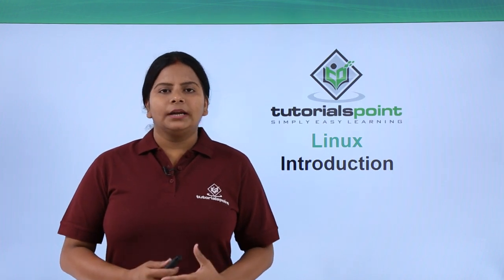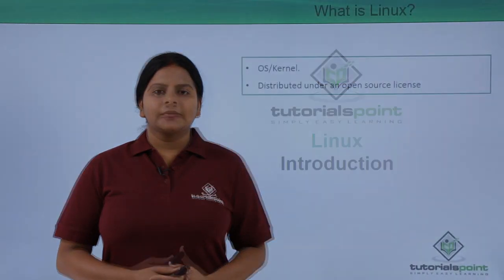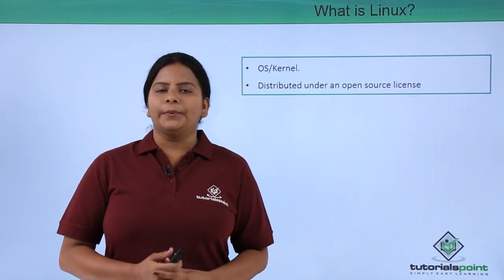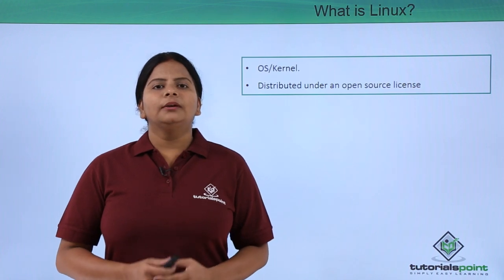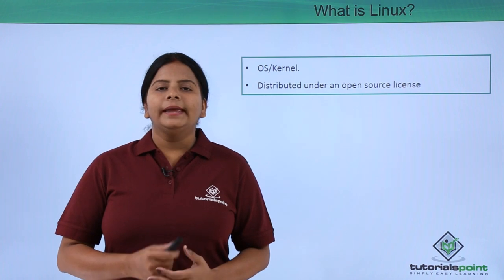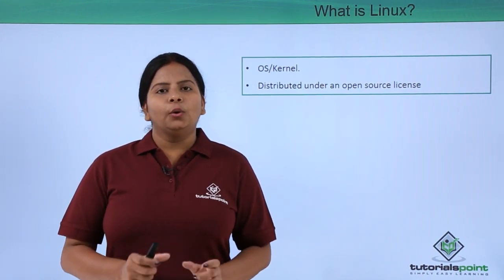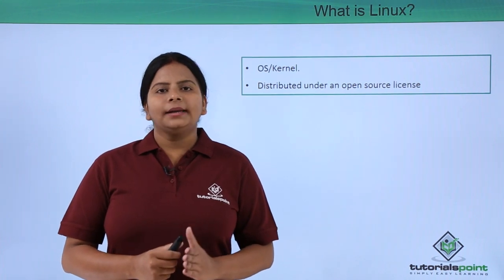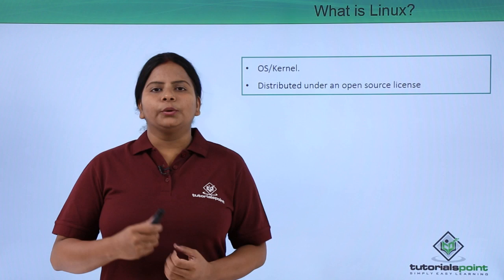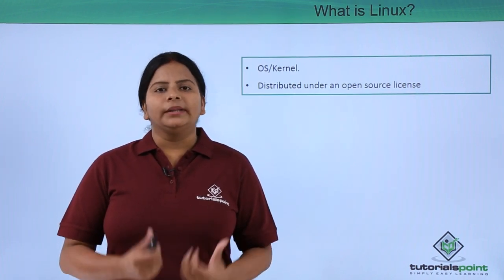First we will understand what the Linux operating system is and how it works. We will see about the kernel version of your operating system. If I am talking about any operating system — either Windows, Mac, or Linux — it has two different parts: two different core programs. One acts as a kernel and the other acts as a shell, where the shell we are going to see later on. But basically, I am going to make you understand what the kernel is.